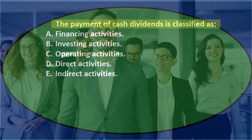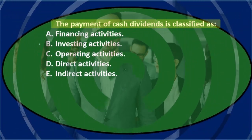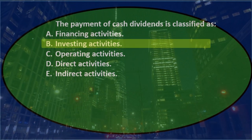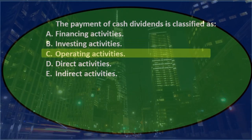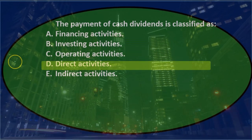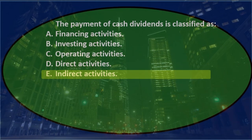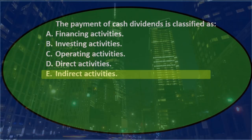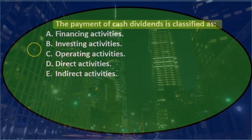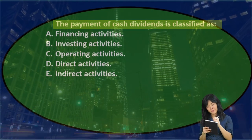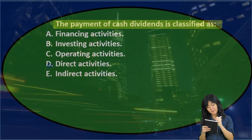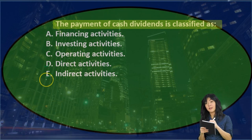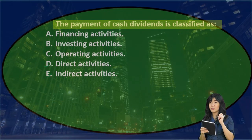Next question: the payment of cash dividends is classified as either A. Financing activity, B. Investing activities, C. Operating activities, D. Direct activities, or E. Indirect activities. We can narrow these down to A, B, and C — financing, investing, or operating — since those are the major components of the cash flow statement. D and E are likely just distractors.